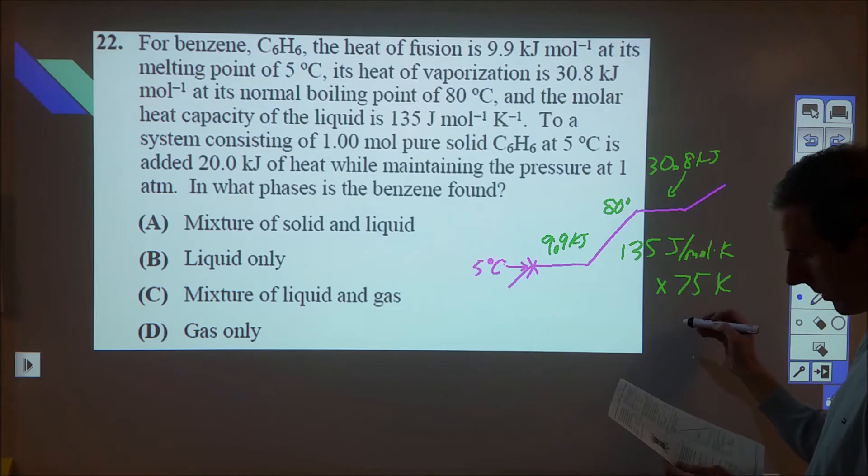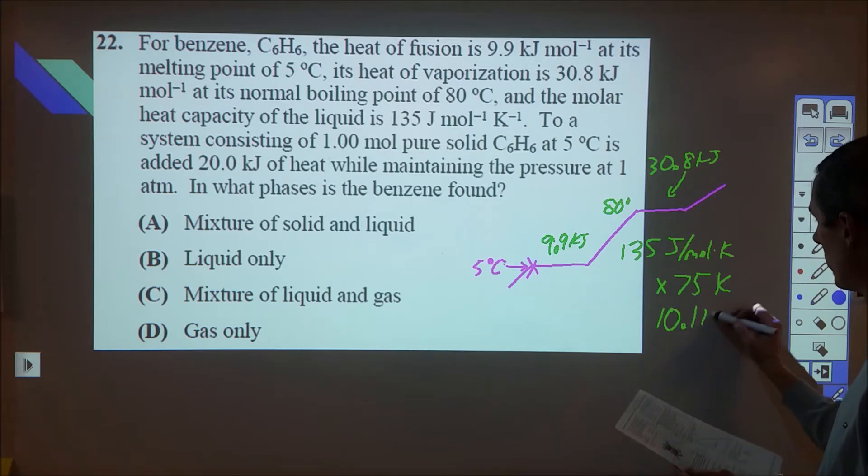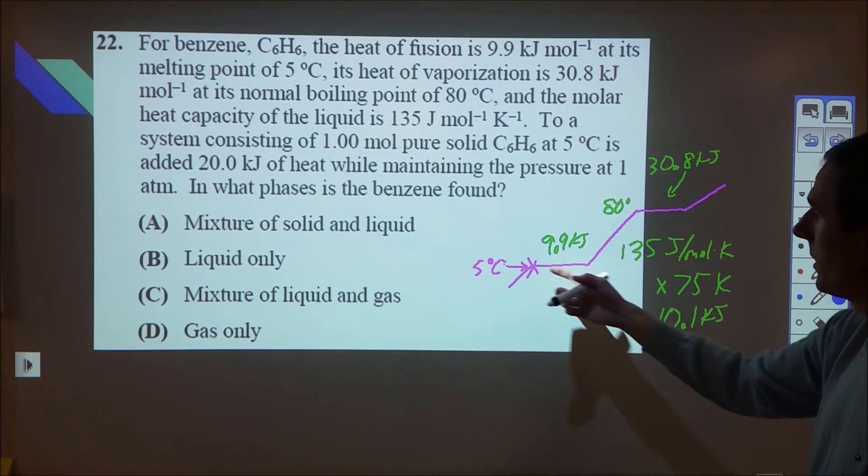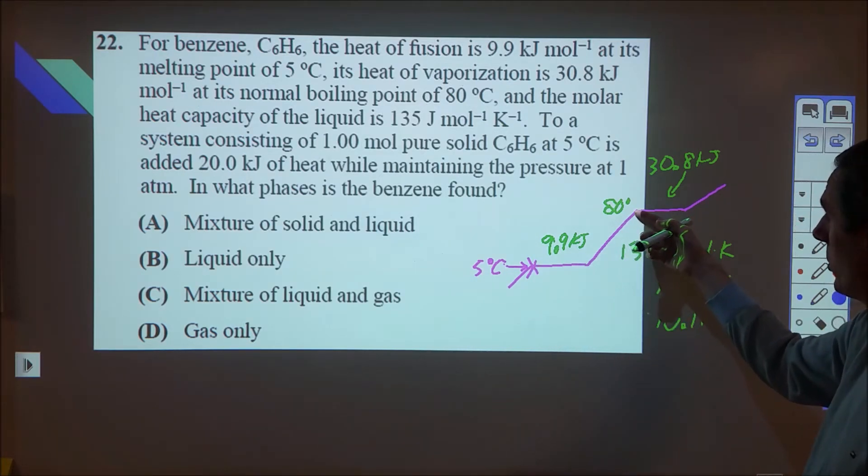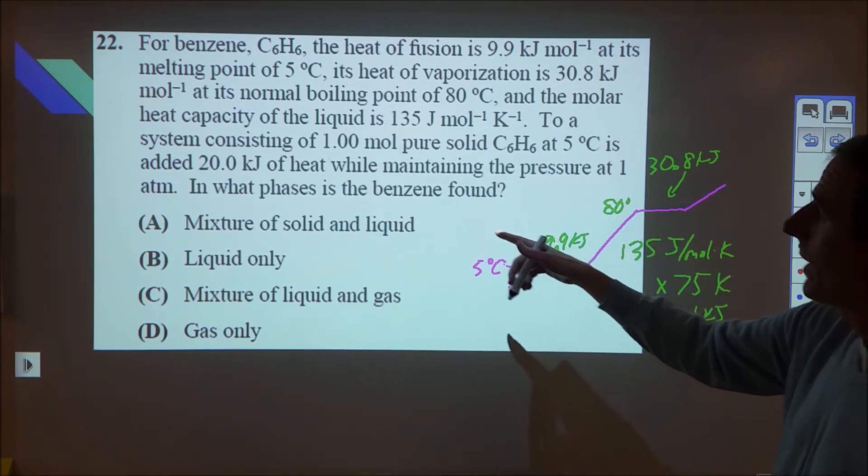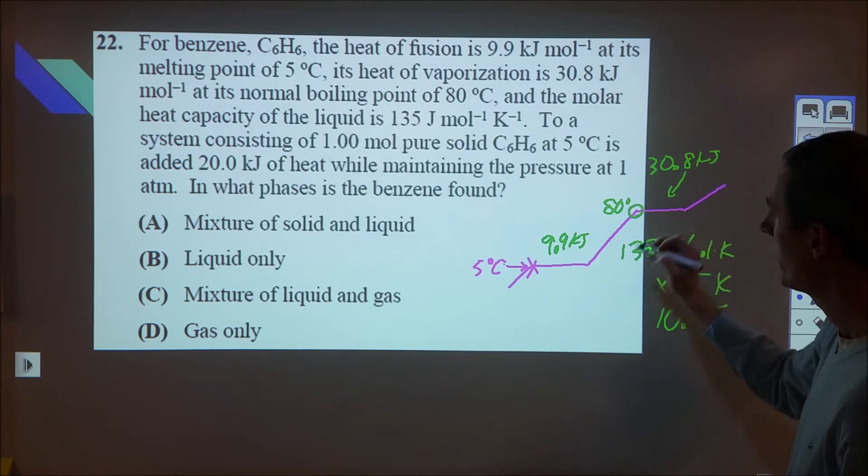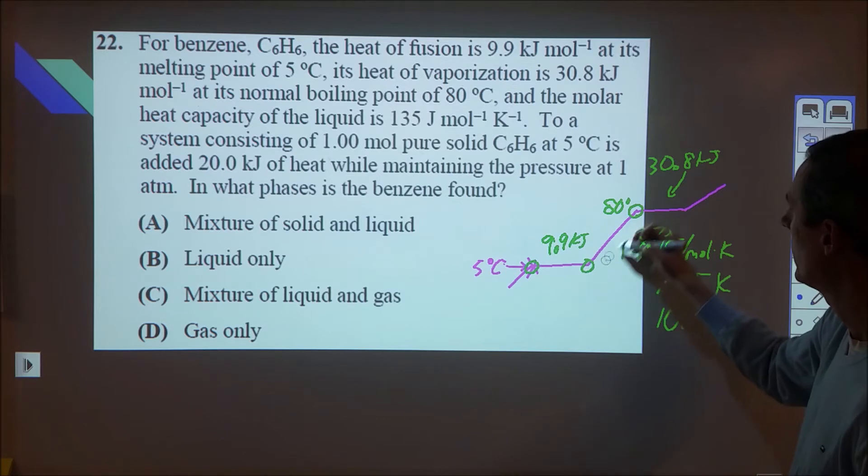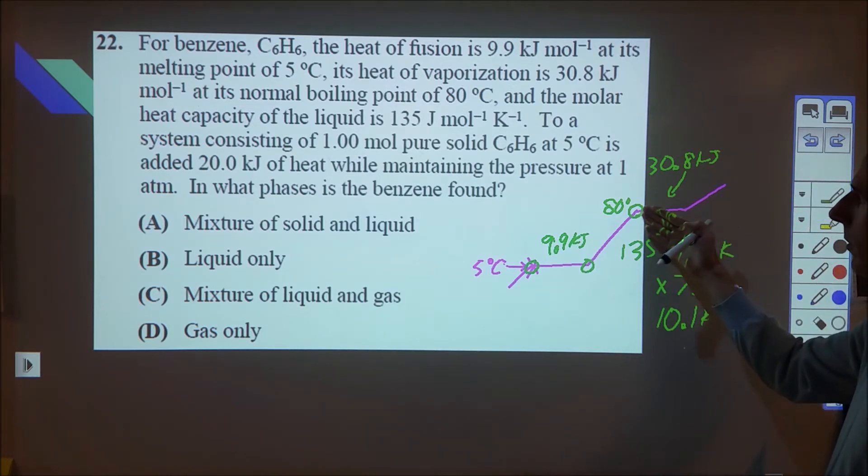So when you do that, that comes out to 10.1 kilojoules. So basically it takes 9.9 kilojoules to melt one mole. It takes 10.1 kilojoules to get up to 80 degrees. Now it says that we input exactly 20 kilojoules of energy, and so that would take us to right at this mark. We're starting here, it takes 9.9 kilojoules to get here, it takes another 10.1 to get here. That's all of our energy, so we're now right here.